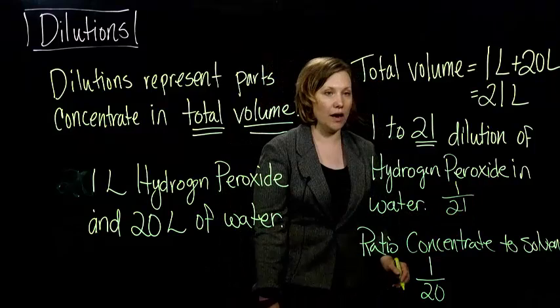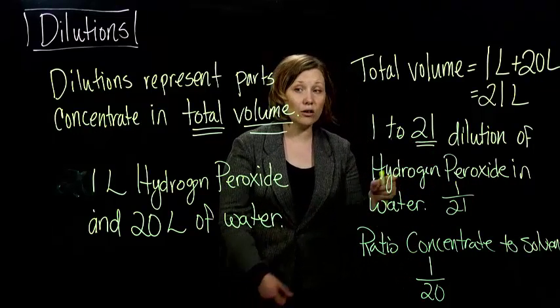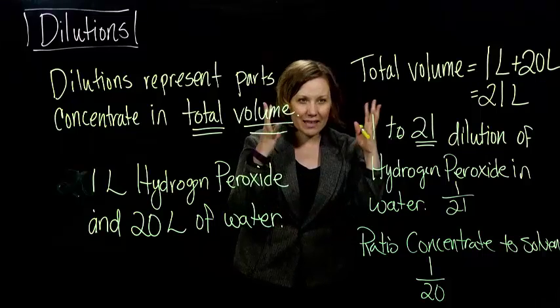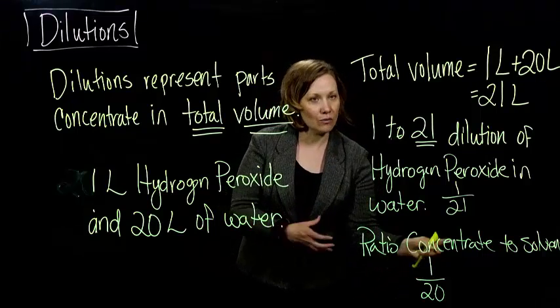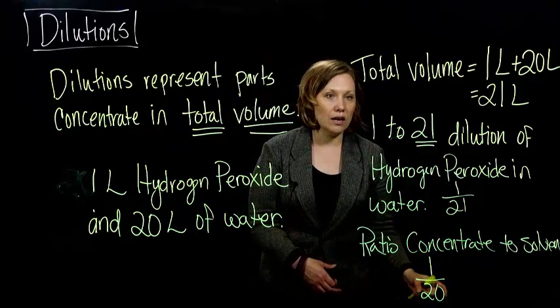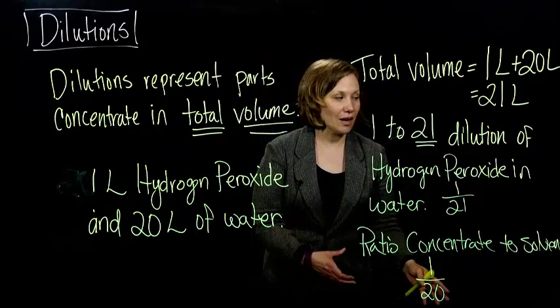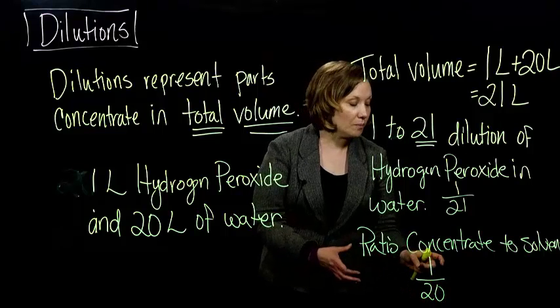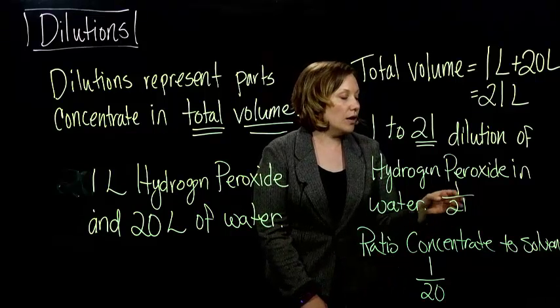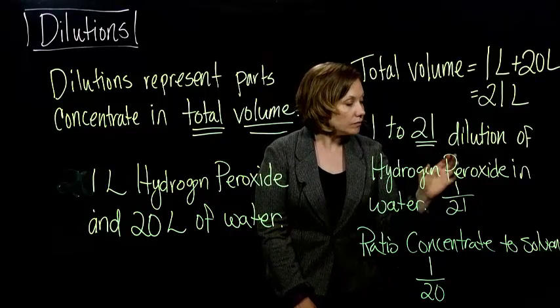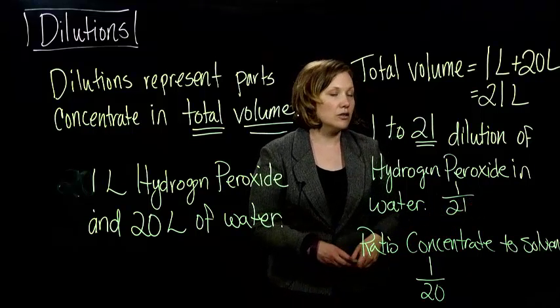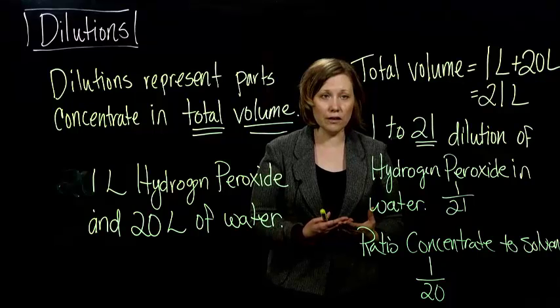So when they tell you, when you see that word dilution, be careful, because what our brains want us to say is one part—it wants to go with the ratio route. One part concentrate to 20 parts hydrogen peroxide—or excuse me, one part concentrate, or in our case was hydrogen peroxide, to 20 parts solvent. But it's really the concentrate to the total volume when they say dilution. So just something to be careful of.